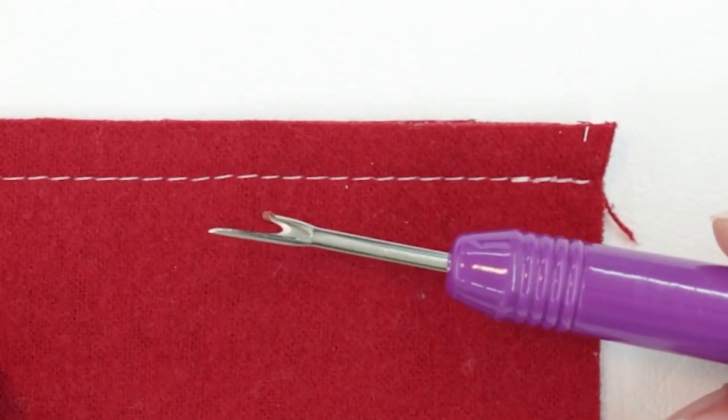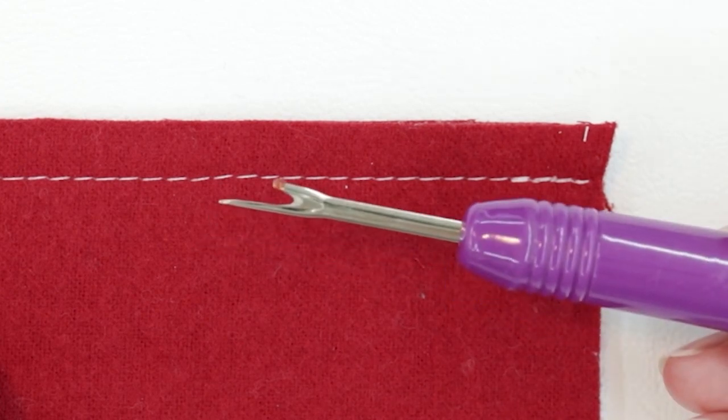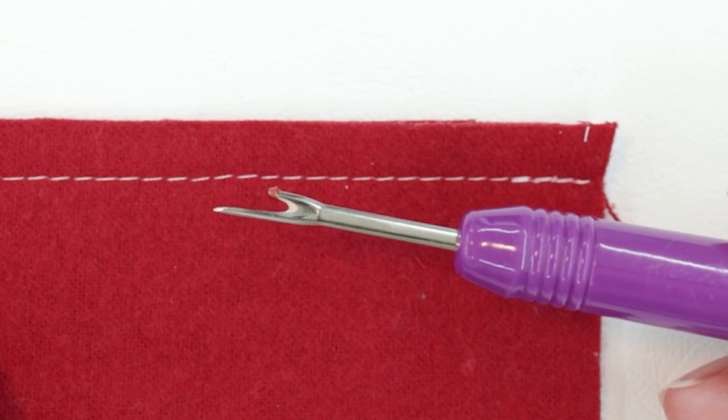When you use your seam ripper, you want it to be turned on its side, so rather than pointing up like this, you want to be able to see the U shape.